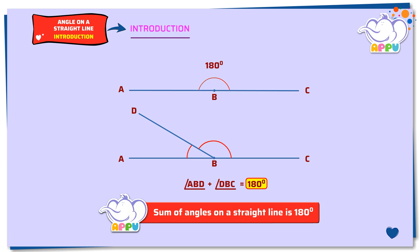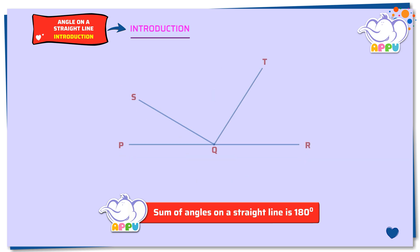Let's look at one more example. Here PQR is a straight line. SQ and TQ are lines forming angles on the straight line PQR. Angle PQS, angle SQT, and angle TQR are angles on the straight line PQR.